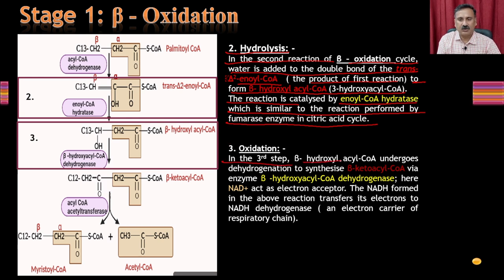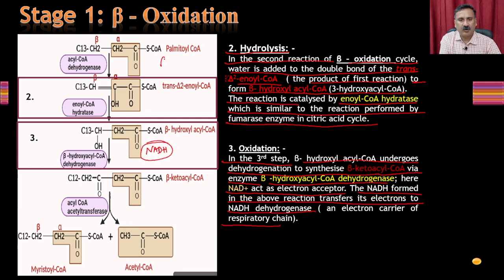Step three is a second round of oxidation. Beta-hydroxyacyl-CoA undergoes dehydrogenation to produce beta-ketoacyl-CoA, catalyzed by beta-hydroxyacyl-CoA dehydrogenase. Here NAD+ acts as the electron acceptor, forming NADH in the process. So from steps one and three, you have produced FADH2 and NADH respectively.